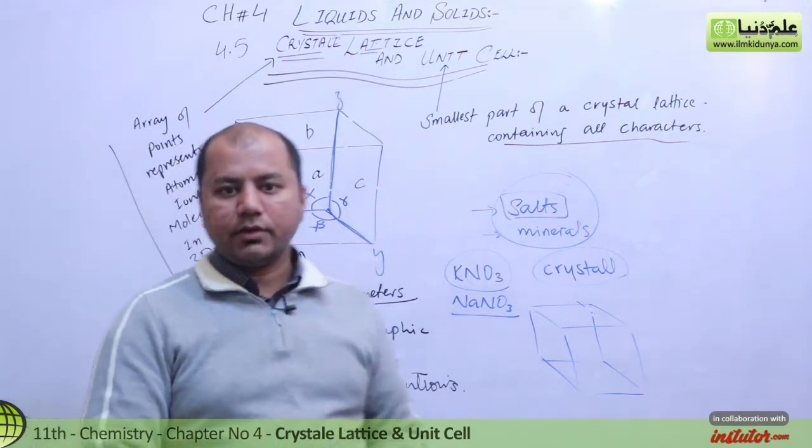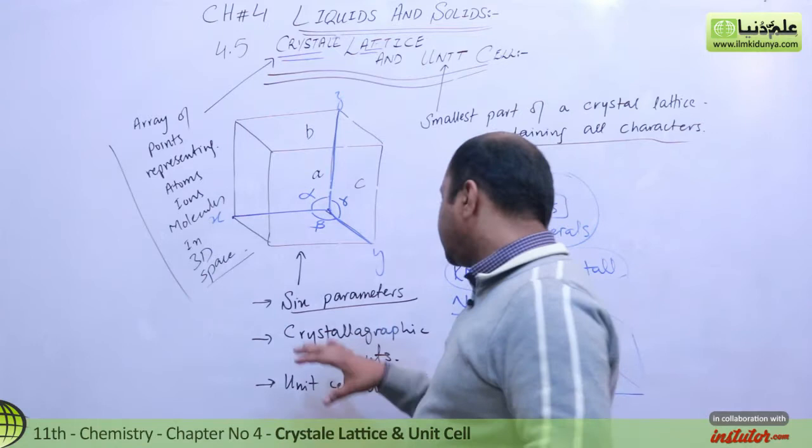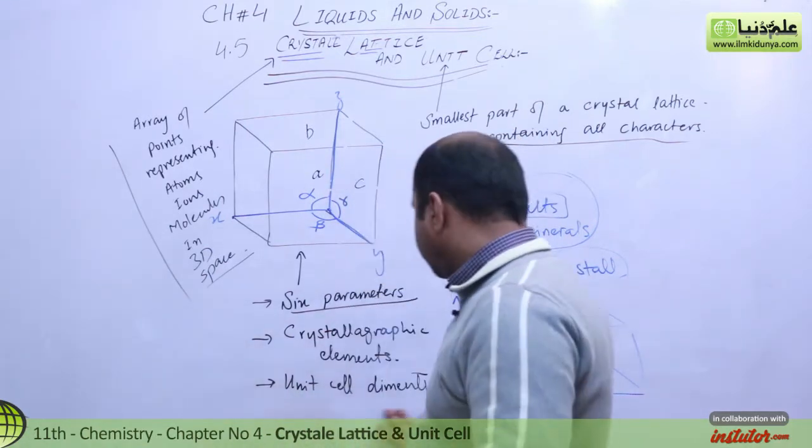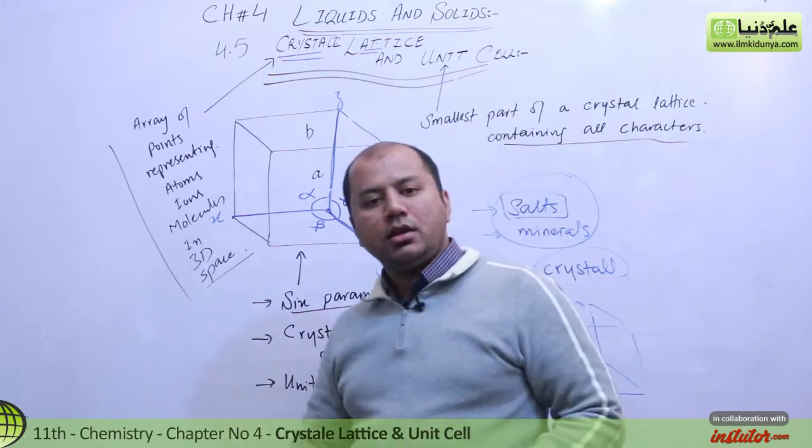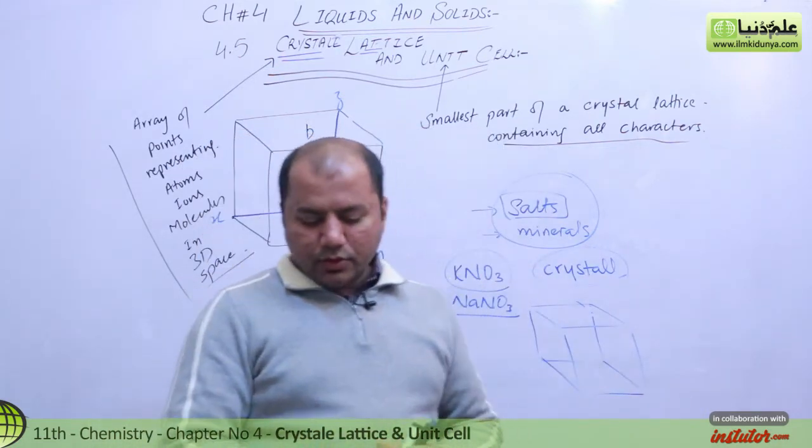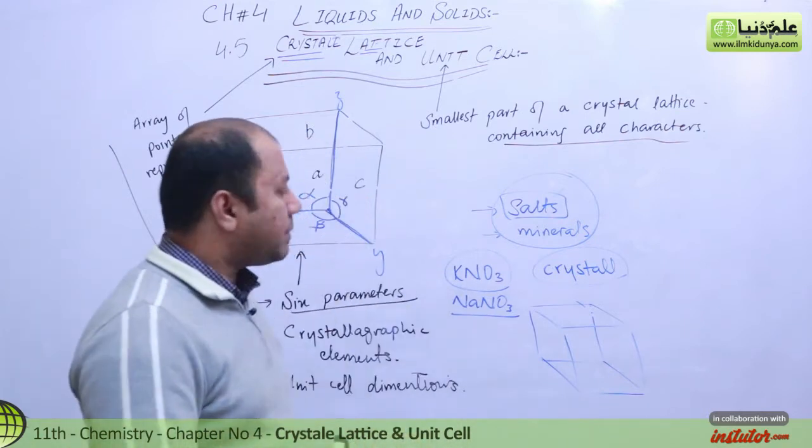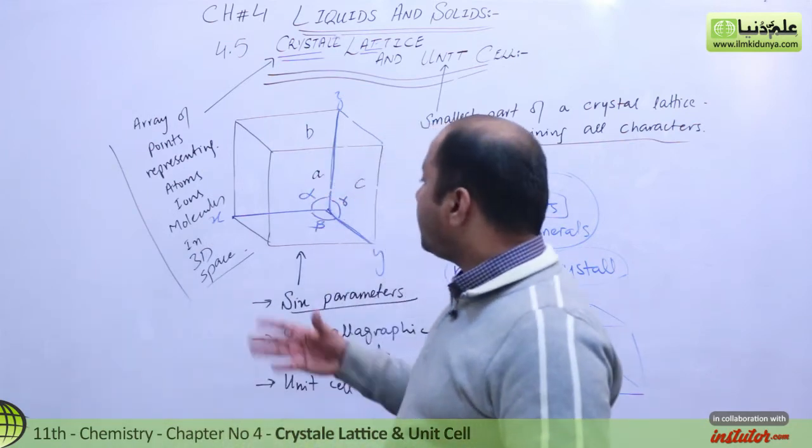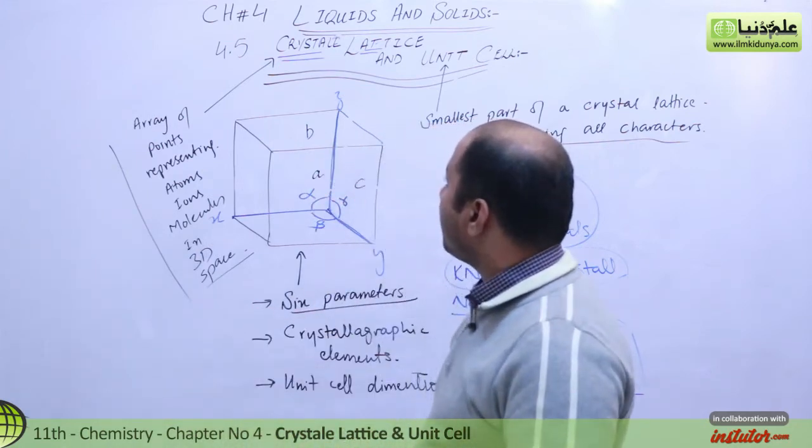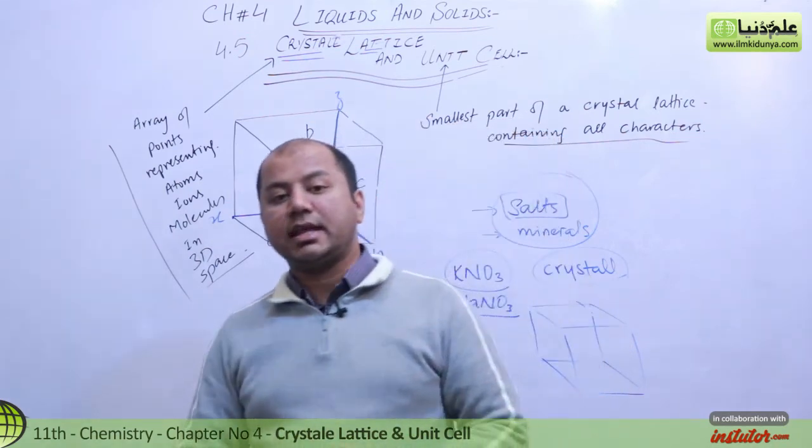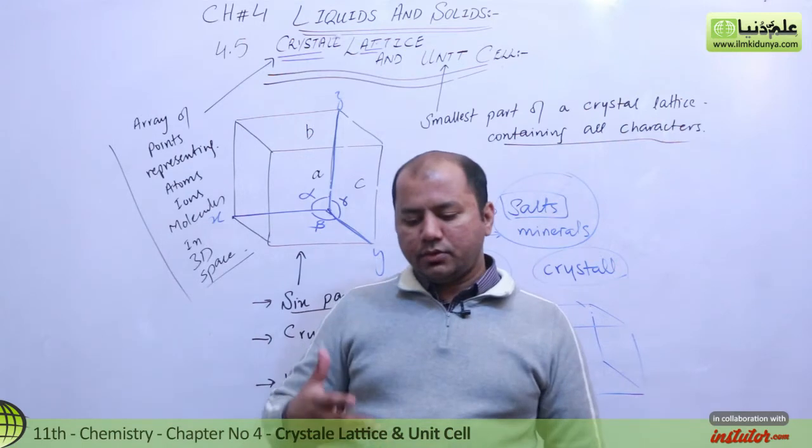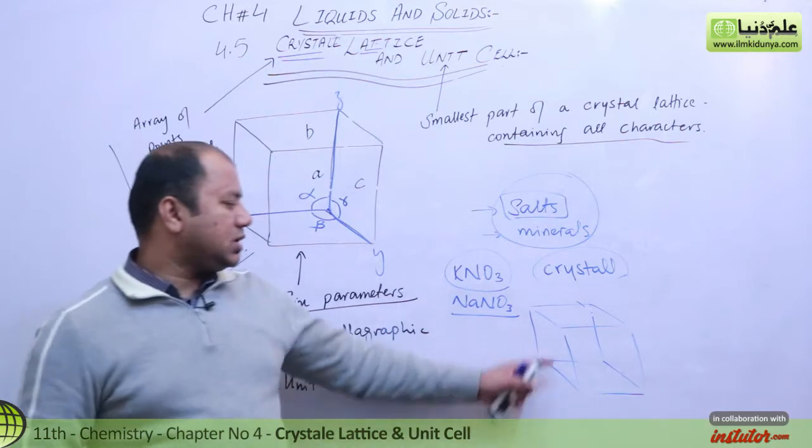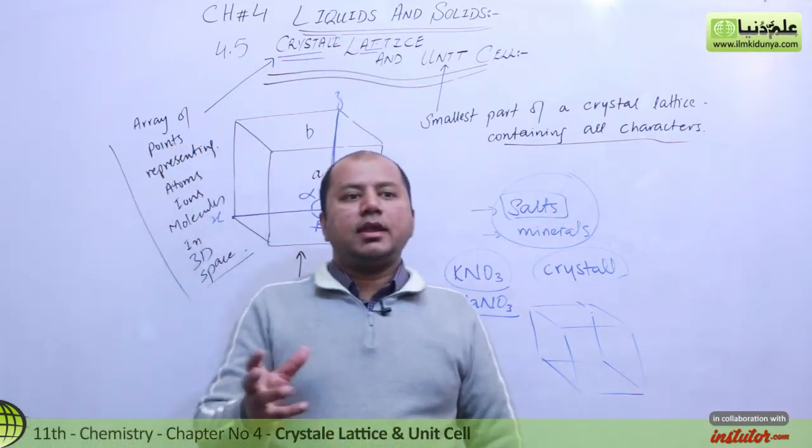What we used to call this thing is crystallographic elements, and you can also say it as unit cell dimensions. I think that's what they have written on this topic in section 4.5 and 4.5.1. In this, they have tried to explain what is crystal lattice and what is unit cell. So I hope you have come to know something about the unit cell and something about the crystal lattice.